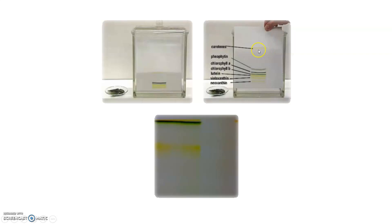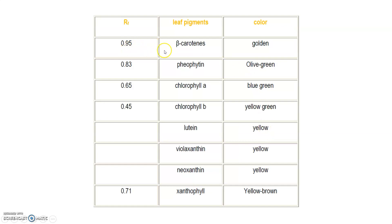The pigments identified include: carotene and pheophytin, chlorophyll A, chlorophyll B, lutein, violaxanthin, and neoxanthin. The RF values are as follows: beta-carotene appears golden yellow; pheophytin appears olive green with an RF of 0.65; chlorophyll A appears blue-green with an RF of 0.45; chlorophyll B appears yellow-green; lutein appears yellow; violaxanthin appears yellow; neoxanthin appears yellow with an RF of 0.71; and xanthophyll appears as a yellow band.